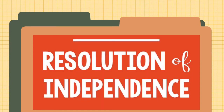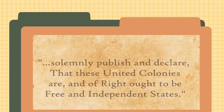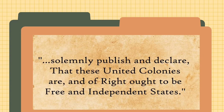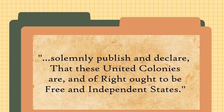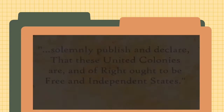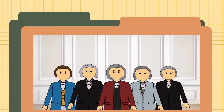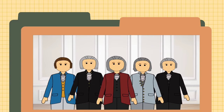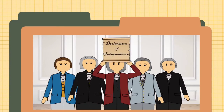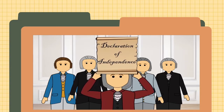In the final section of the Declaration of Independence, the colonists solemnly publish and declare that these united colonies are and have the right to be free and independent states. With those words, the American colonists had charted a new path towards freedom. On July 4th, 1776, the Declaration of Independence was officially adopted by the Second Continental Congress, and a new nation was born.